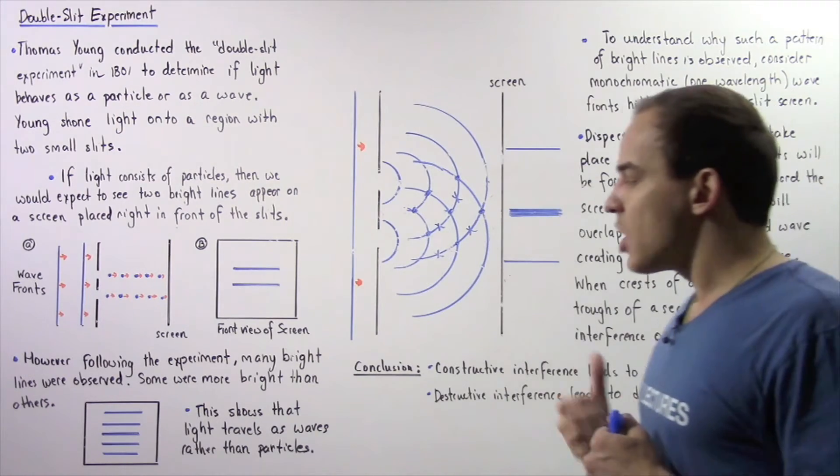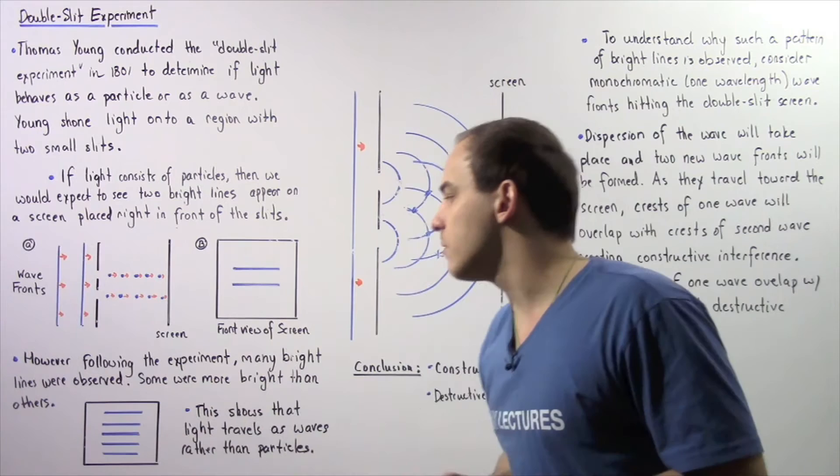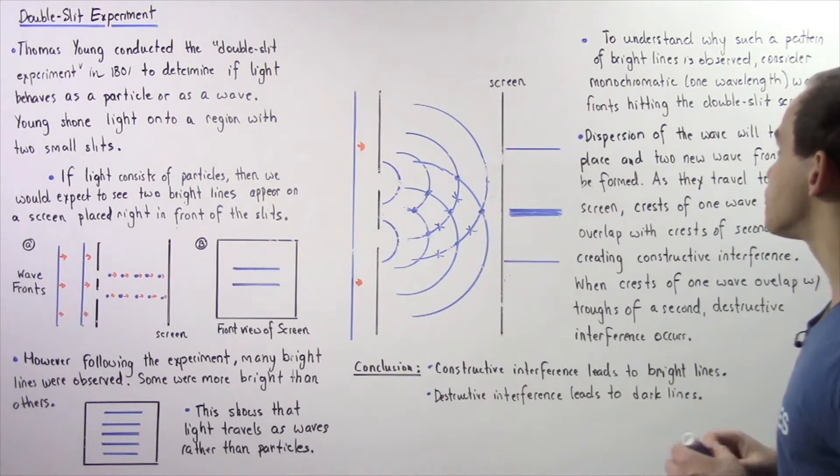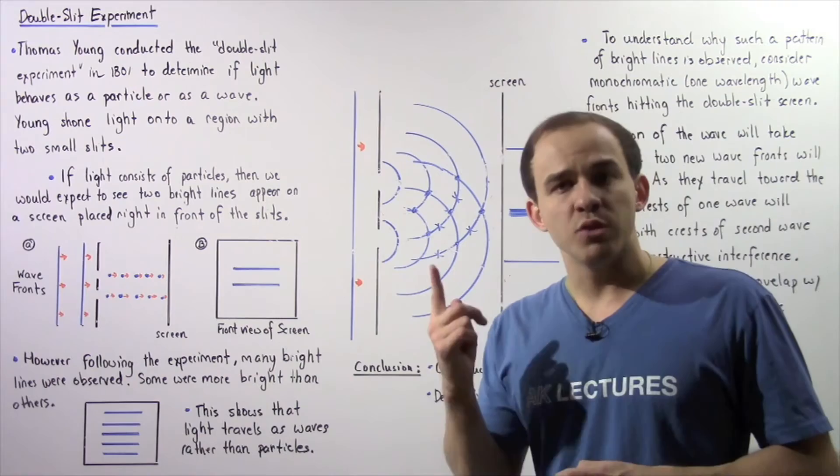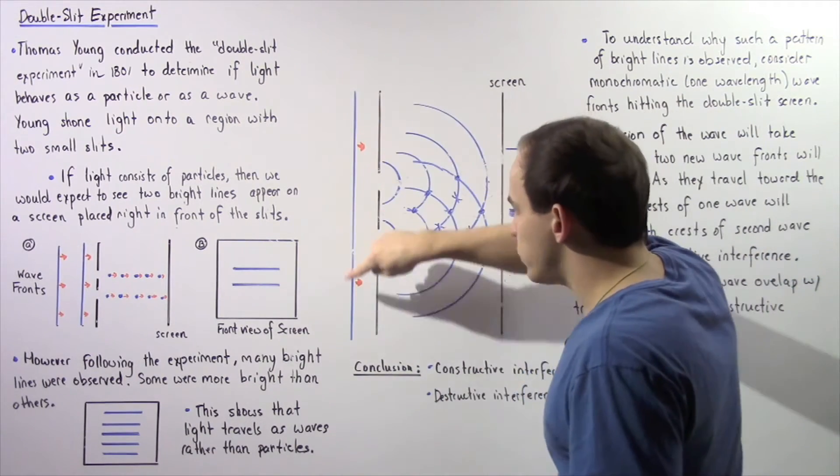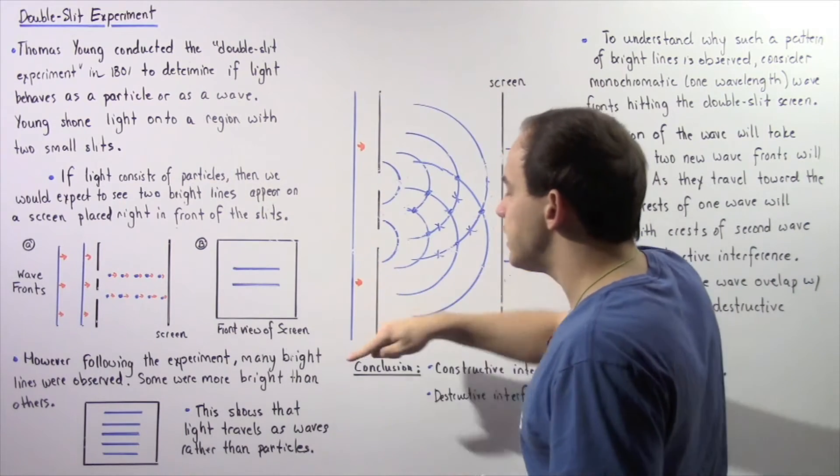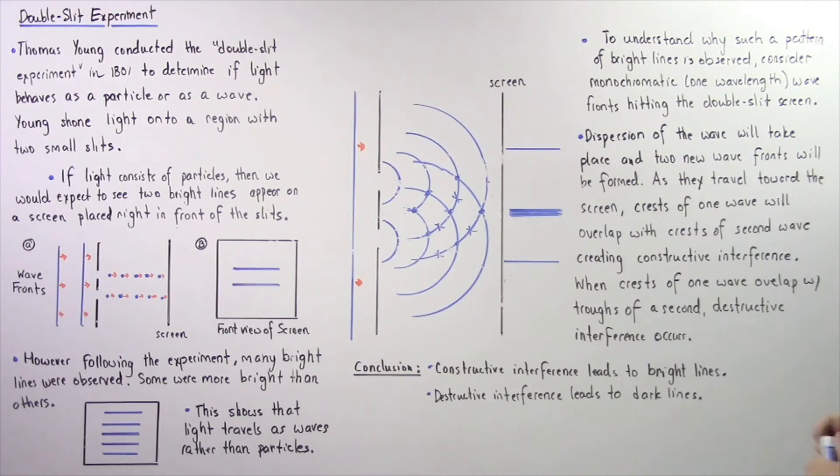Now how exactly are we to explain the spectrum of bright and dark colors? To understand why such a pattern of bright lines is observed, consider monochromatic wave fronts hitting the double slit screen. Monochromatic simply means we're dealing with one color, one wavelength. So let's suppose we have a wave front that consists of a single wavelength, so it's monochromatic.